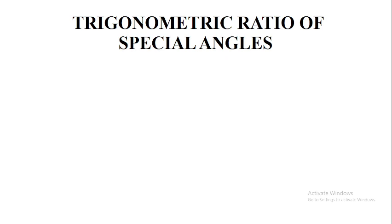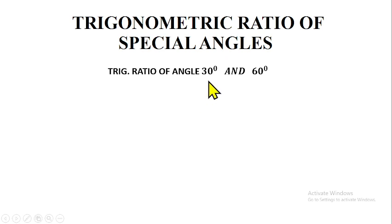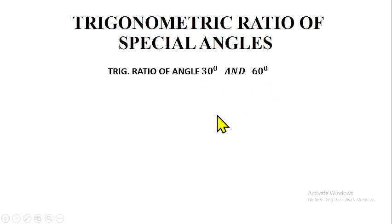The first special angles we are going to discuss are 30 degrees and 60 degrees. You must know sin 30°, cos 30°, tan 30°, sin 60°, cos 60°, and tan 60° off-hand. The only way to know them is by knowing the trigonometric ratios of these special angles. Let's discuss how we derive the ratios for 30° and 60°.